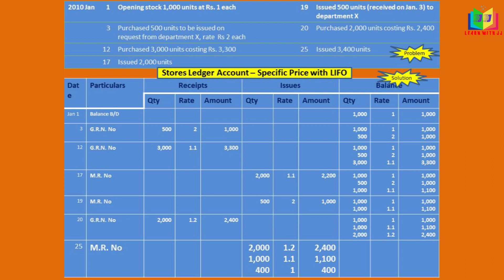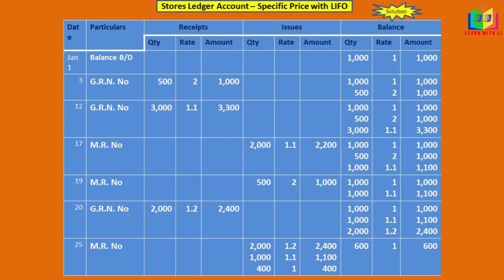On the 25th, we have an issue of 3400 units. This is a LIFO method, so we issue from the last batch first. We have 2000 units — we will issue those first. We need 1400 more, so we take from the 1.1 rate batch: we have 1000 units there. From the 1000 units at rupee 1, we take 400. Together, we have issued 3400 units, and the balance left is 600 units at the rate of rupee 1, so the amount is 600.